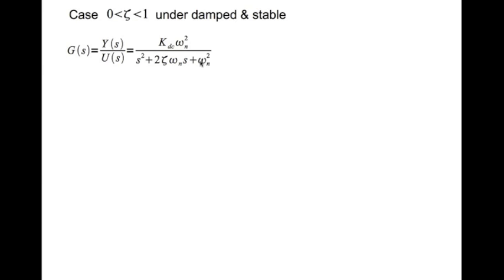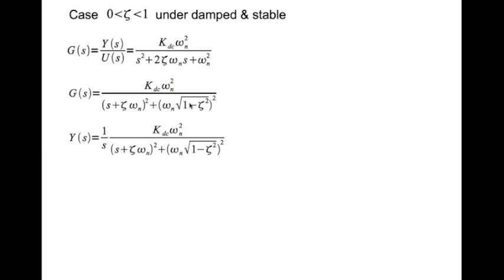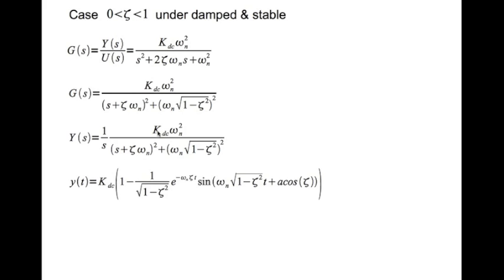You can complete the square for the characteristic equation, and this is what your G(s) looks like. You can write an expression for Y(s) for a unit step — this is what it looks like. If you do partial fraction expansion and invert to find y(t), this is the expression you get.